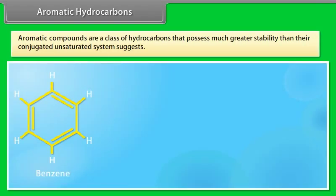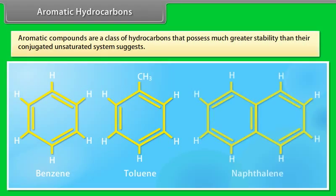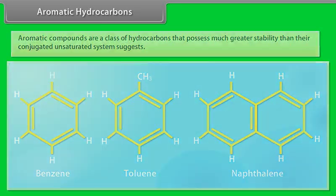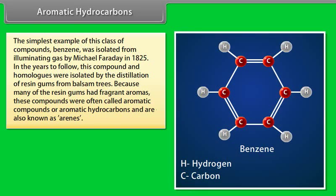Aromatic hydrocarbons. Aromatic compounds are a class of hydrocarbons that possess much greater stability than their conjugated unsaturated system suggests. The simplest example of this class of compounds, benzene, was isolated from illuminating gas by Michael Faraday in 1825. In the years to follow, this compound and its homologues were isolated by the distillation of resin gums from balsam trees.